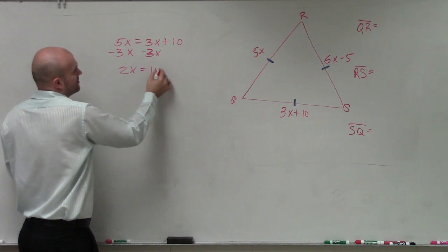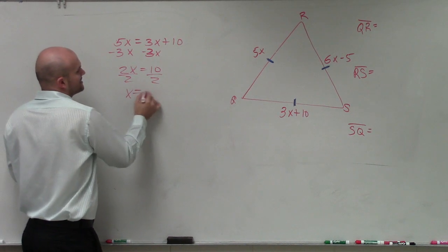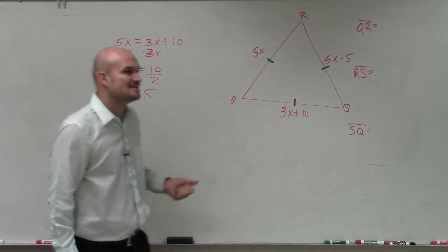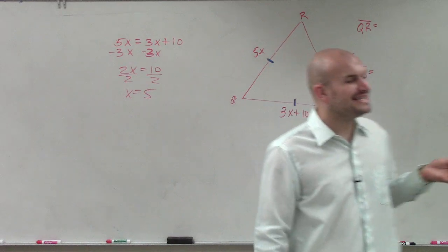2x equals 10. Divide by 2, divide by 2, x equals 5. That means the value of x is equal to 5.